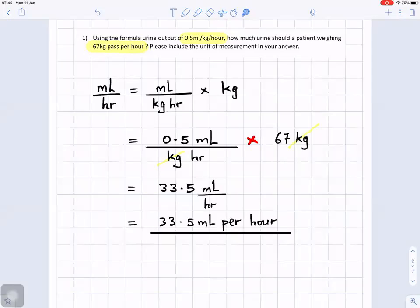Using the formula, urine output of 0.5 milliliters per kilogram per hour, how much urine should a patient weighing 67 kilograms produce per hour? Please include a unit of measurement in your answer.